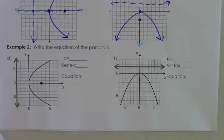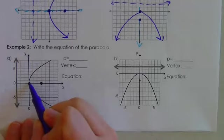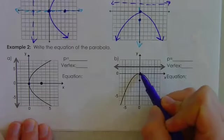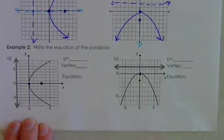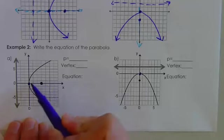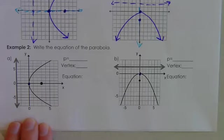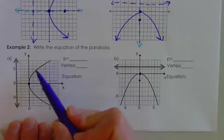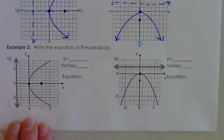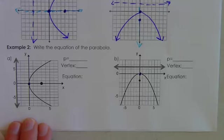We're going to write the equation of some parabolas. These are going to be centered at the origin — the vertex is at (0,0). It's on the line with the focus, which is on the x-axis. This parabola is opening to the right, which means P is going to be positive. Because it's opening to the right, it's BFFs with the x, so your 4P value is going to be with the x.